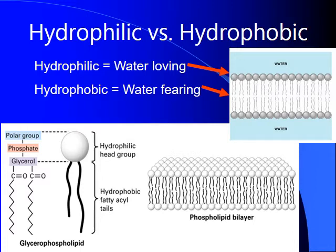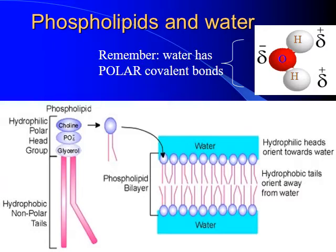The hydrophilic heads means they like to interact with water because they do have little charges on them. Remember, water is a slightly polar molecule. The hydrophobic tails have no charges, so they don't like to interact with water — that's why they tend to face towards each other when put into water. If you put a whole bunch of phospholipids together, they will actually naturally form a little capsule with this bilayer surrounding the outside. They will naturally do that based upon just the charges.